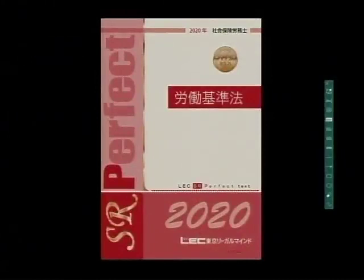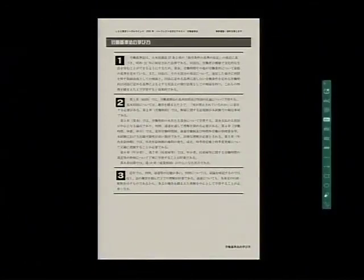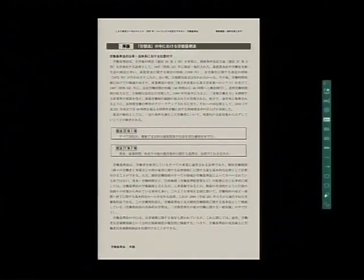今回から使用しますテキスト、こちらのパーフェクトシャローシですね。このテキストを使ってまいりますので、準備の方をお願いいたします。テキストの目次等があり、その後出題一覧等があり、そして労働基準法の学び方というところがあるかと思います。また、次のページには、労働法の中における労働基準法についての序論という形で解説文があります。